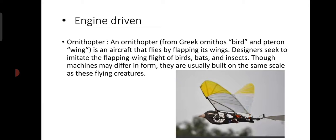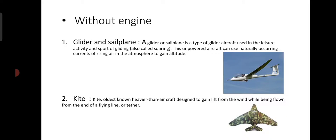In engine driven aircraft, the third type is ornithopter. An ornithopter is an aircraft that flies by flapping its wings. Designers seek to imitate the flapping wing flight of birds, bats, and insects. Though machines may differ in form, they are usually built on a small scale resembling these flying creatures. It is used as a drone to spy.